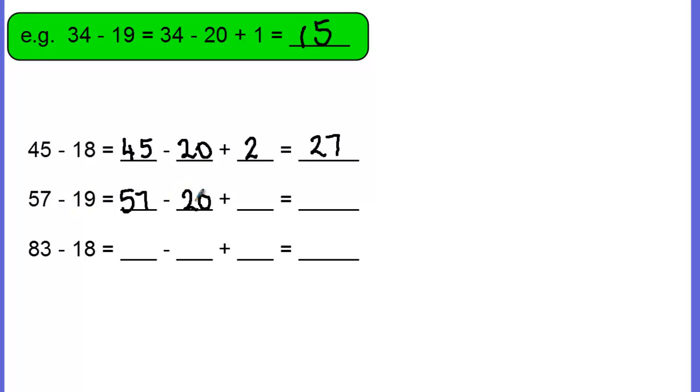Because we rounded it up and we had to round it up with 1 to make it up to 20, so we'll put that 1 there. And now we'll do the question: 57 take away 20 is 37, add the 1, 38.